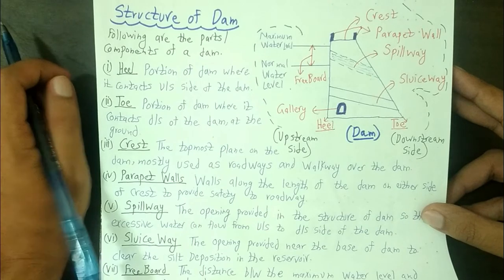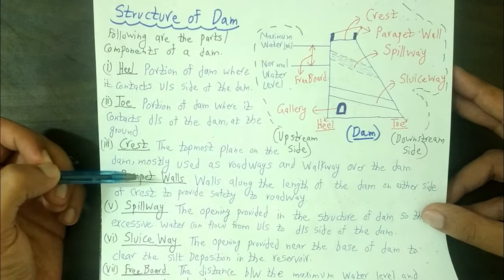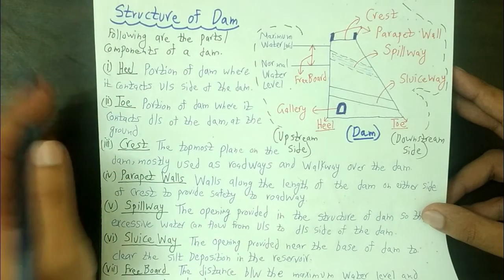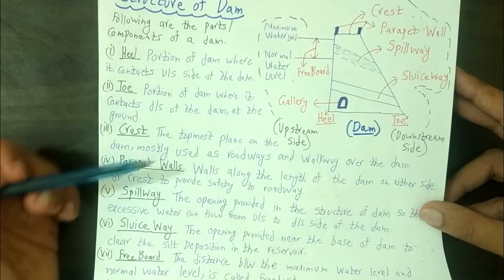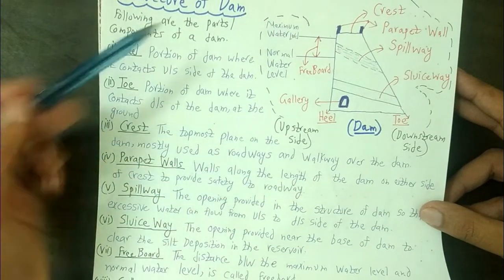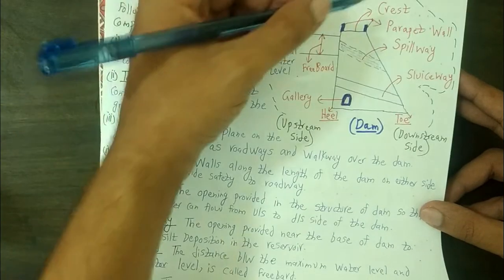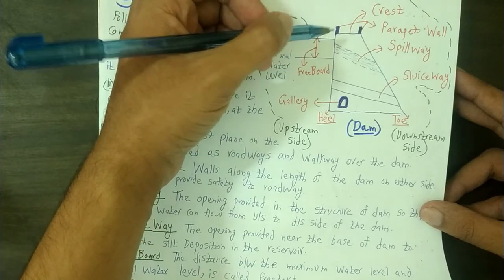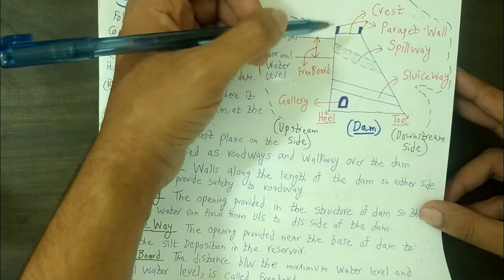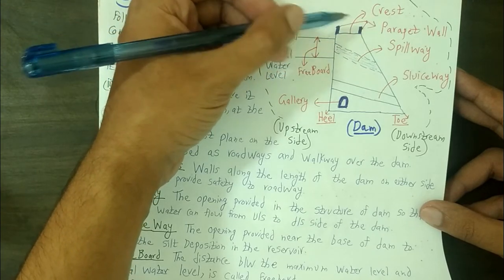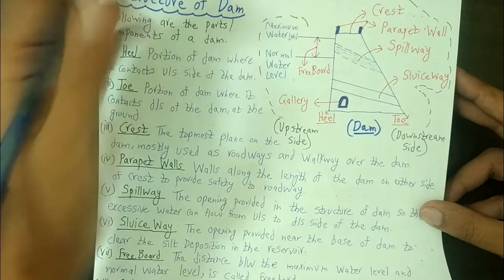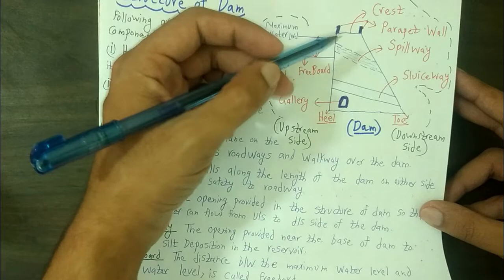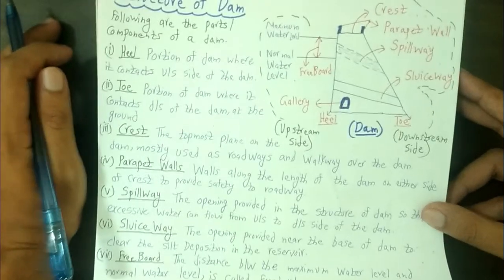Next, after the crest, we will study about the parapet walls. These are walls along the length of the dam on either side of the crest to provide safety to the roadway. The highlighted dark blue portions are our parapet walls, and their purpose is to provide safety to this roadway or highway. They are walls provided at both ends of the crest.